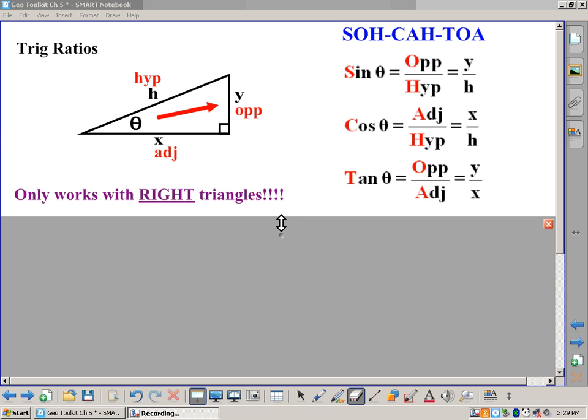Well, we're going to be talking about another geometry connections to our toolkit entry today. This one is trig ratios, and we've already been discussing how to do tangent, the ratio tangent, and today we're also going to add in not only tangent, but sine and cosine.